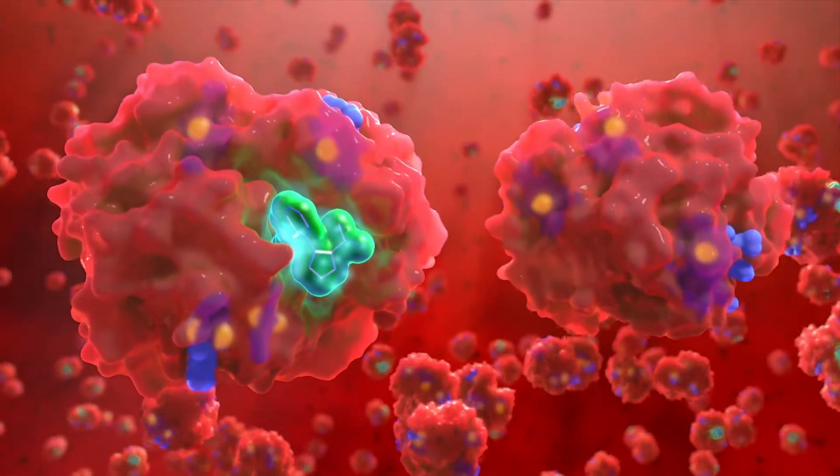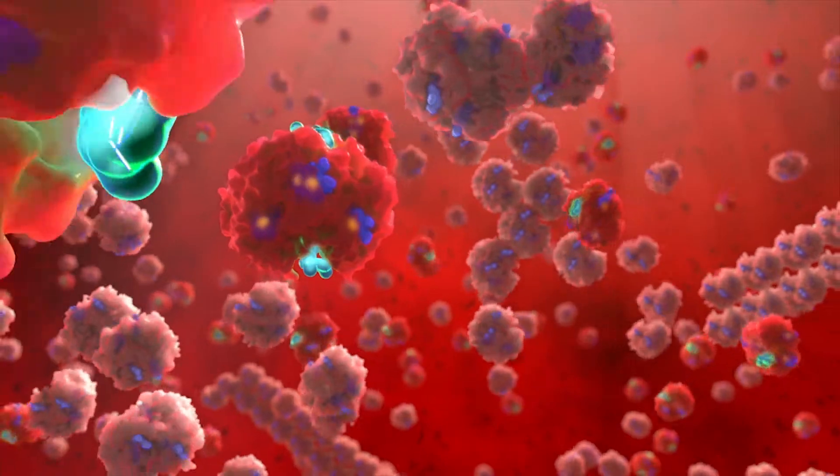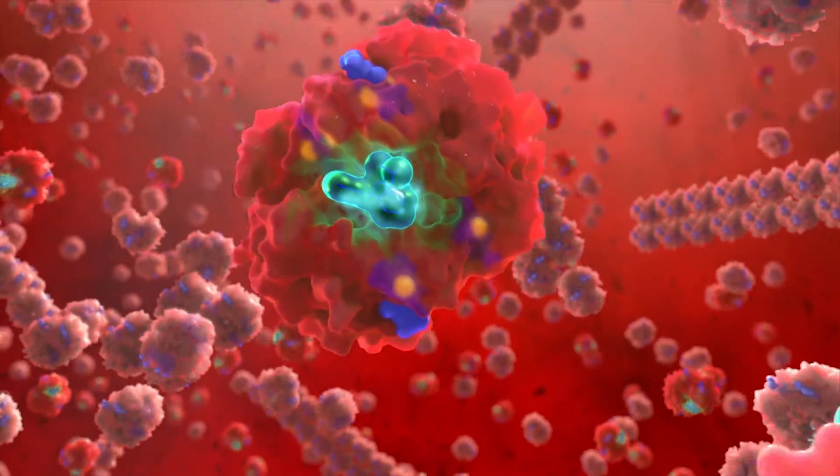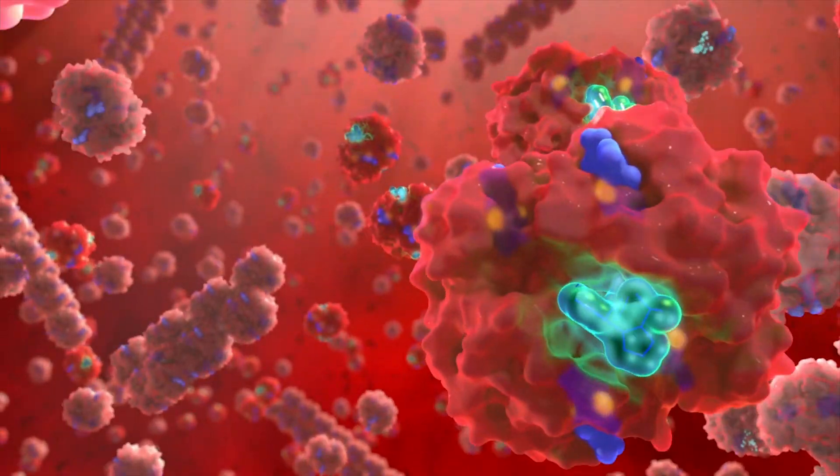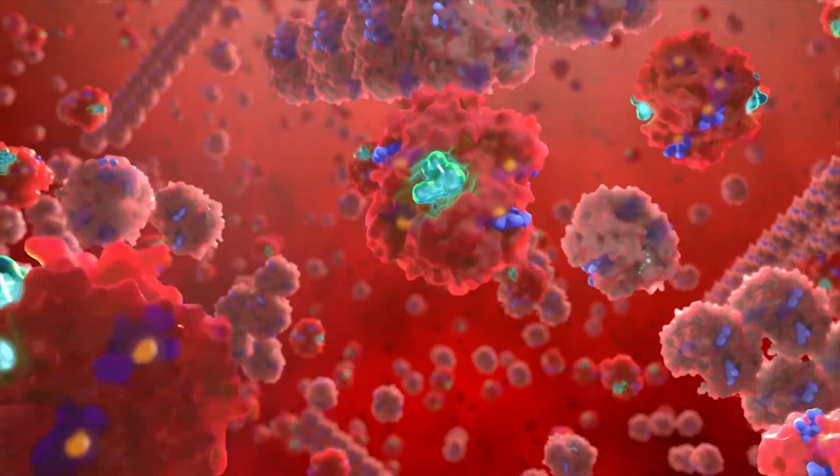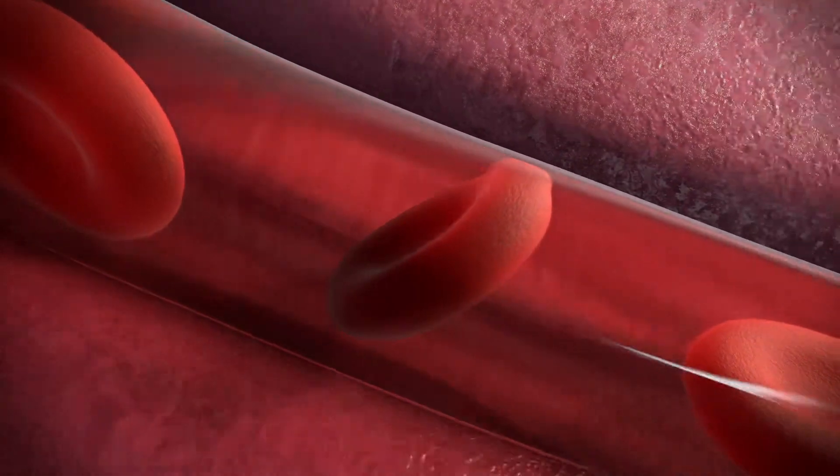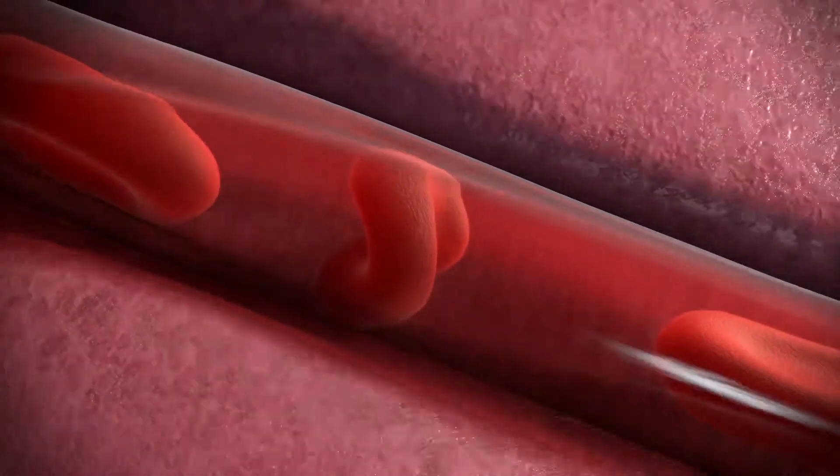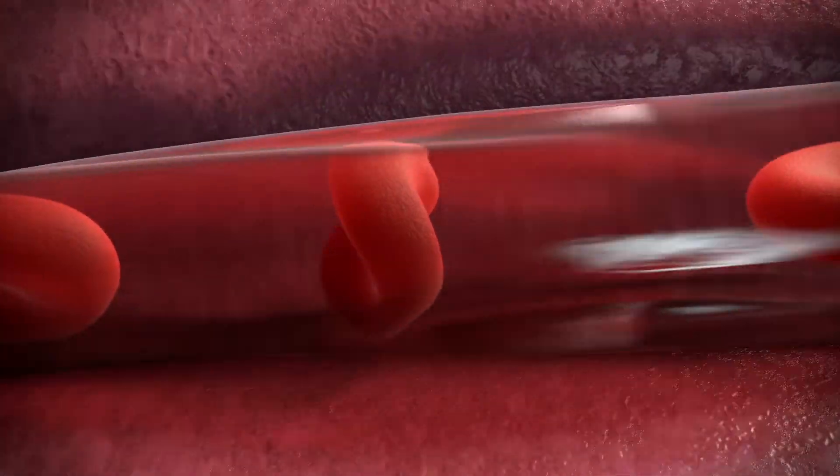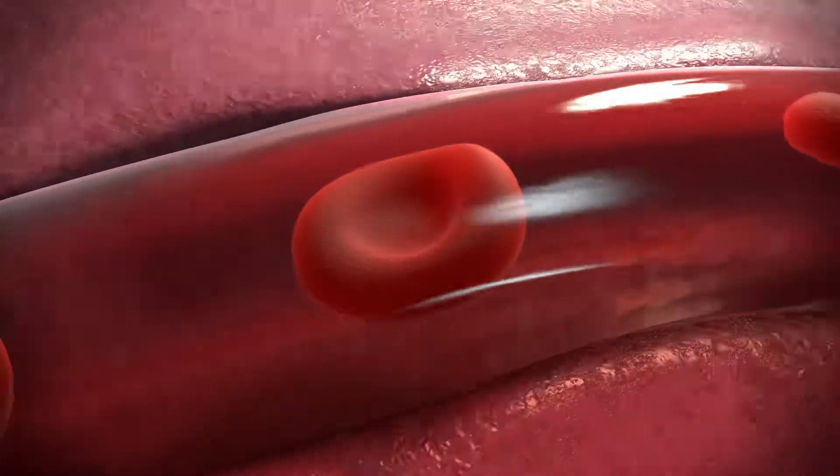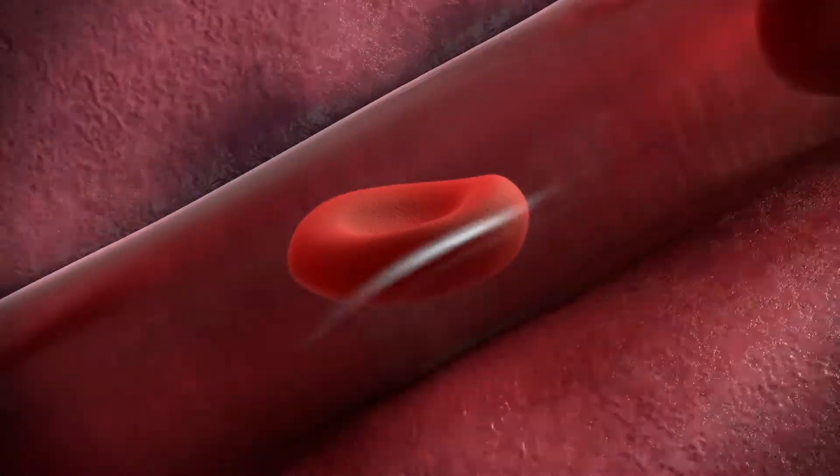When Voxelotor binds to sickle cell hemoglobin, the abnormal hemoglobin molecule stays in its oxygenated state where it cannot polymerize into rigid chains. Through this anti-polymerization effect that prevents red blood cell sickling, Voxelotor may be shown to reduce the hemolysis and vaso-occlusion that is observed in sickle cell disease.